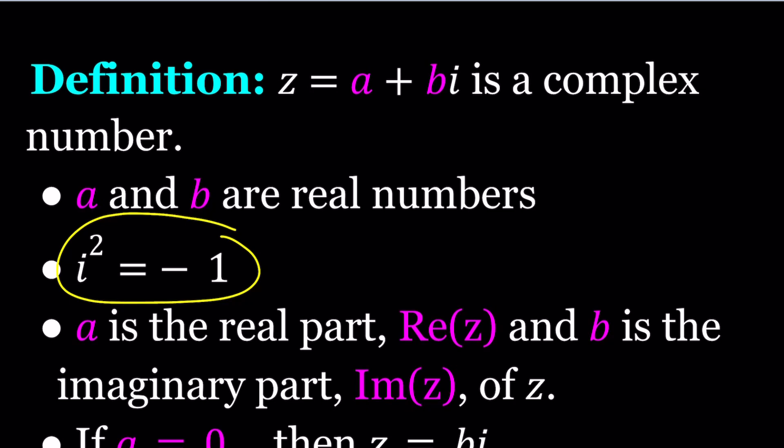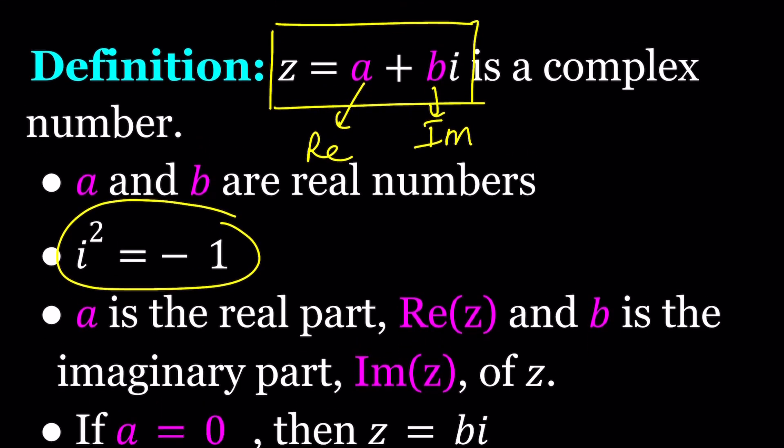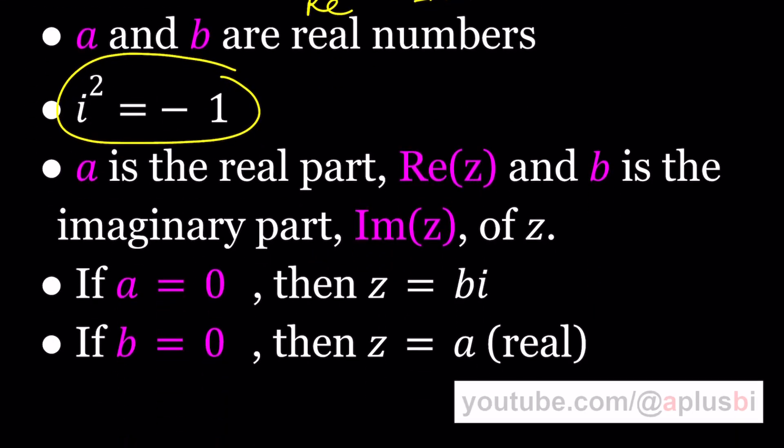A plus bi is a complex number if a and b are real numbers. a is called the real part and b is called the imaginary part of z. You can also write a complex number as x plus yi. If a equals zero then we get z equals bi which is a pure imaginary number. And if b is zero we get a real number, which implies that real numbers are also complex numbers.